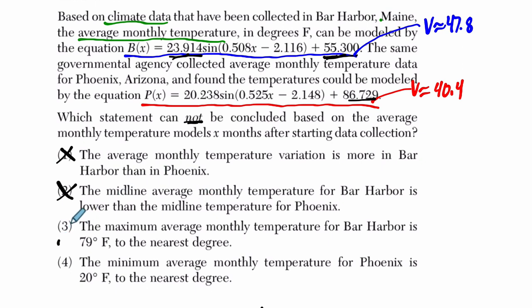So it must be choice 4, but let's just take a look at that. The minimum average monthly temperature for Phoenix is 20 degrees to the nearest degree. Well, I can see right here 86 minus 20 is not close to 20. They're hoping to confuse this amplitude here.